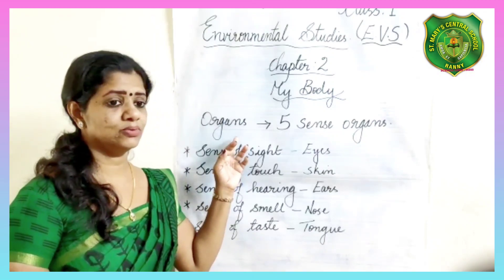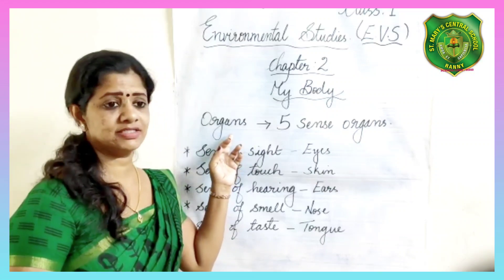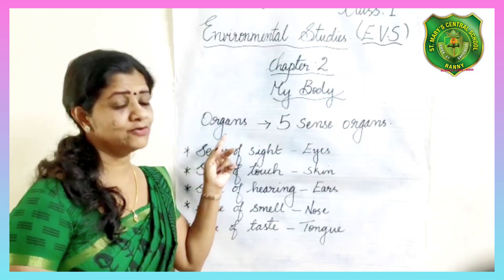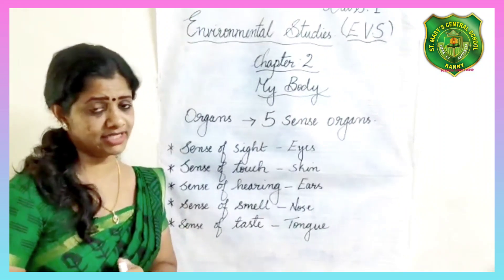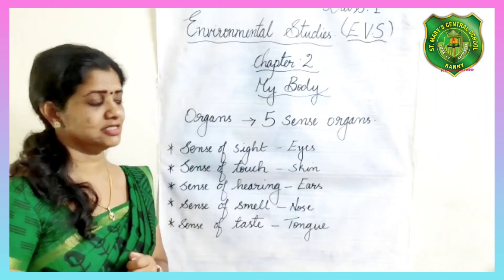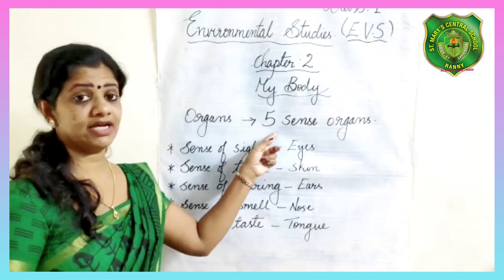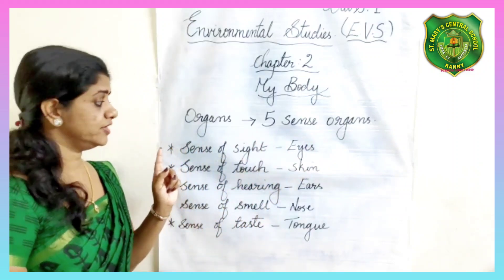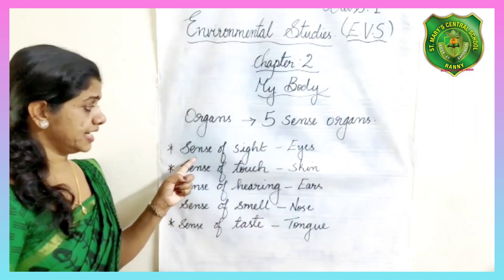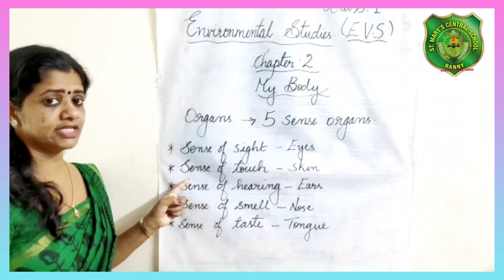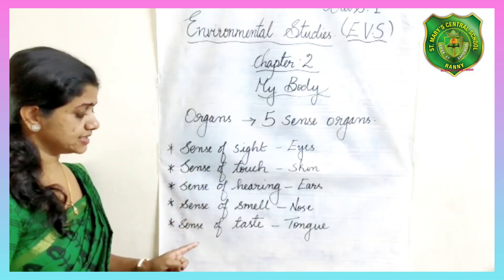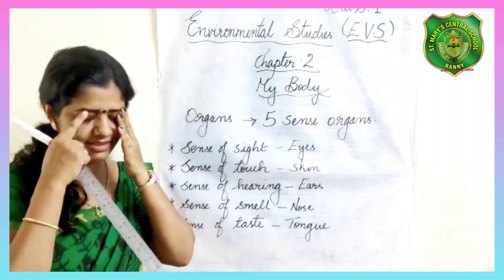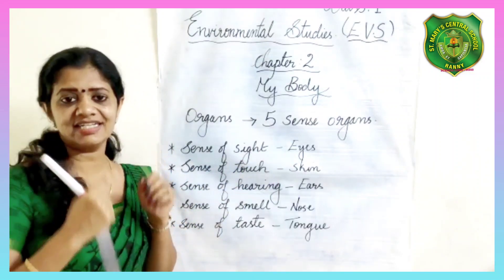Do you remember what organs are? We have many parts in our body — they are called organs. We also learned about five sense organs: sense of sight, sense of touch, sense of hearing, sense of smell, and sense of taste. The five sense organs are eyes, ears, nose, tongue, and skin.